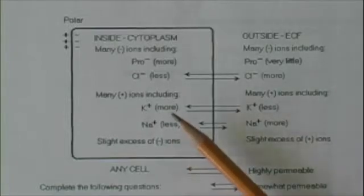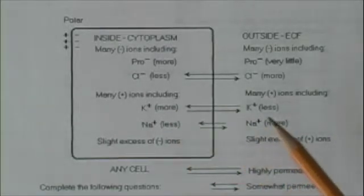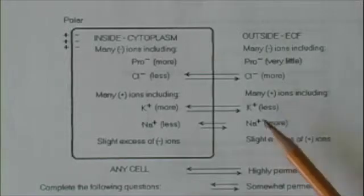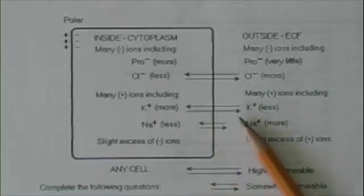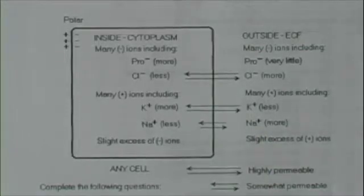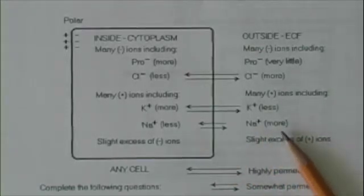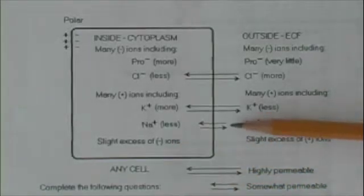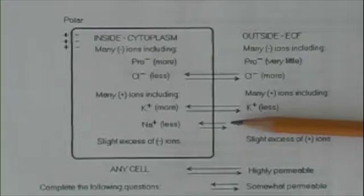Likewise, potassium. There's more inside the cell than outside, and so the difference, a concentration gradient, tends to cause a net movement of potassium out. With sodium, same situation. More on the outside, less on the inside, and the concentration gradient tends to force sodium into the cell.